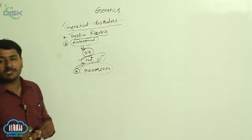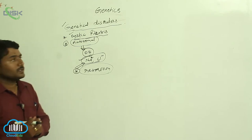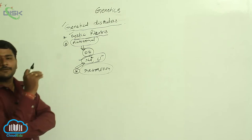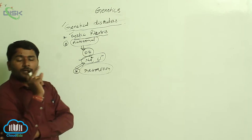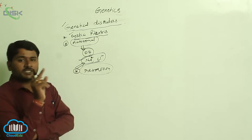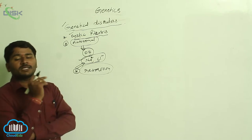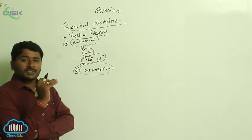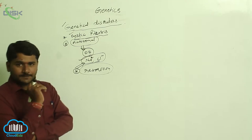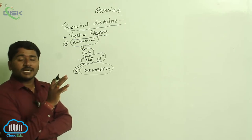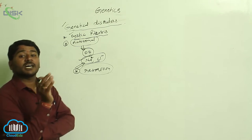Cystic fibrosis sometimes leads to death. It is an autosomal recessive disorder due to mutations in a gene responsible for the absorption of salts in the mucous membranes of our body. When this gene is mutated, the salts are not absorbed; instead, they undergo resorption.